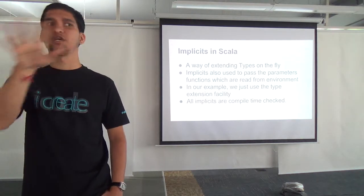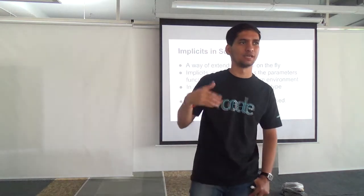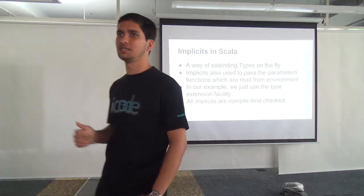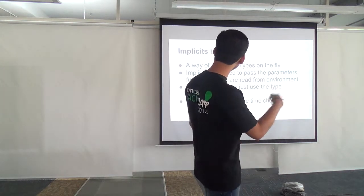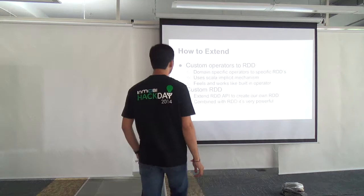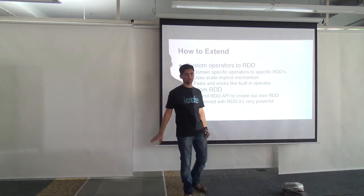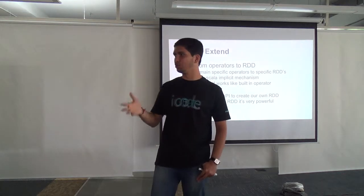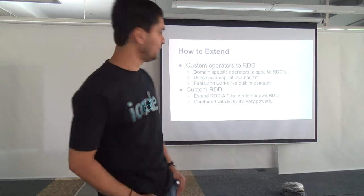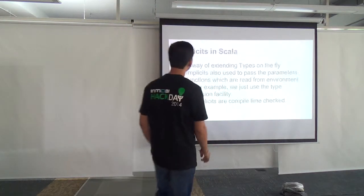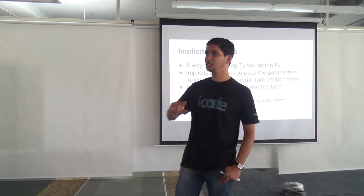This is only for the Scala API of Spark. In Python, there's something called monkey patching where you can dynamically add things. For Java, this capability may not be available. What we do is add custom operators to the RDD using the implicit mechanism — using Scala's mechanism to add new operators to the RDD, not changing Spark itself. First, we'll see an implicit example in Scala, then how to apply it in Spark.